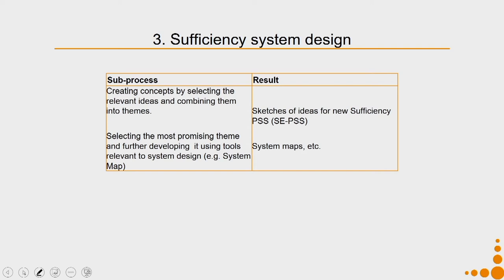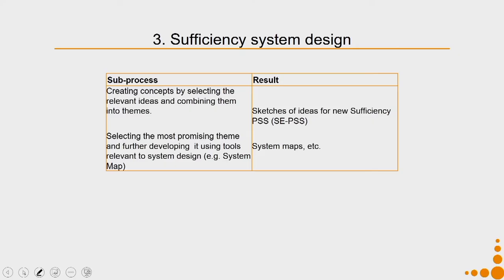Then comes the sufficiency system design stage, corresponding to the system design stage of MSDS methodology. The first sub-process is creating concepts by selecting the relevant ideas and combining them into themes — producing sketches of ideas for a new sufficiency PSS (SE-PSS). Then we select the most promising themes and further develop them using tools relevant to system design, including the systems map and all the tools we have already discussed.